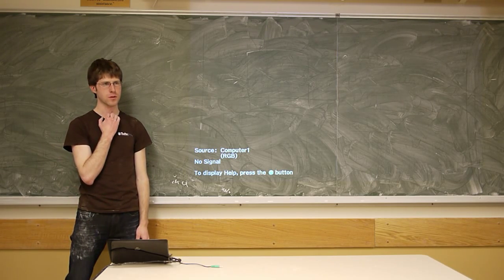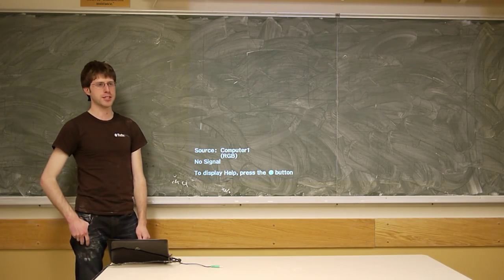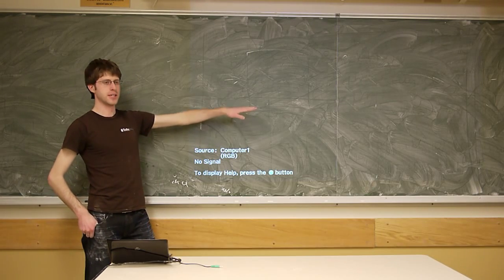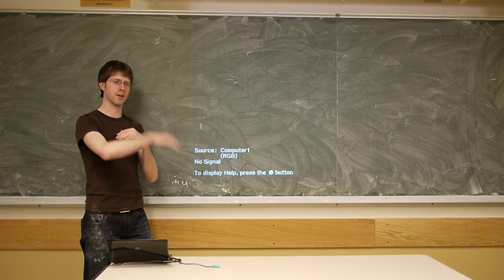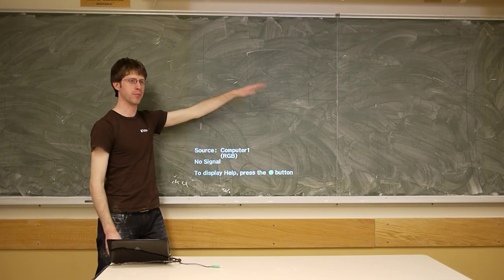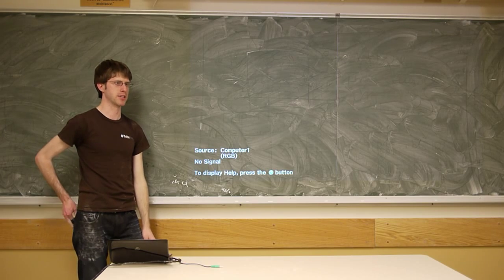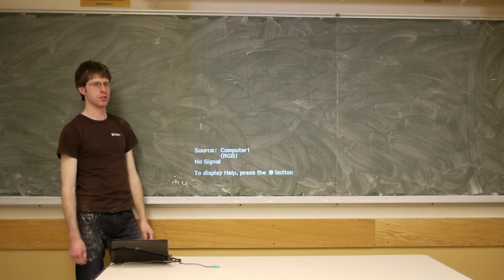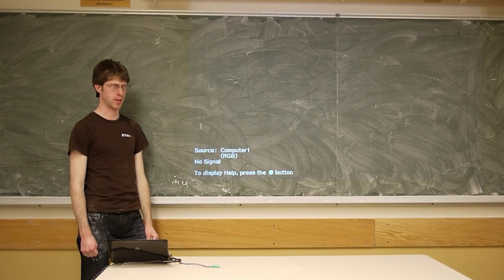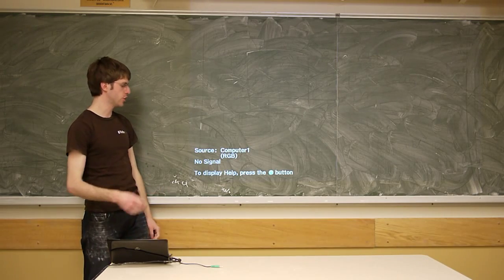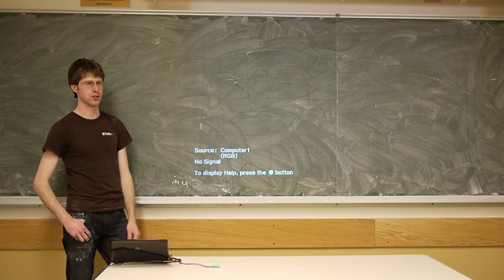On queue size: your program should be able to operate with a queue of any size. For early testing it might help to make the queue size huge so you never have a full queue—that just reduces one variable. But by the time you're done, you should be able to handle a queue of almost any size. You should not be relying on it being a certain size—I should be able to set the queue to whatever size I want in your grading session and it should work.